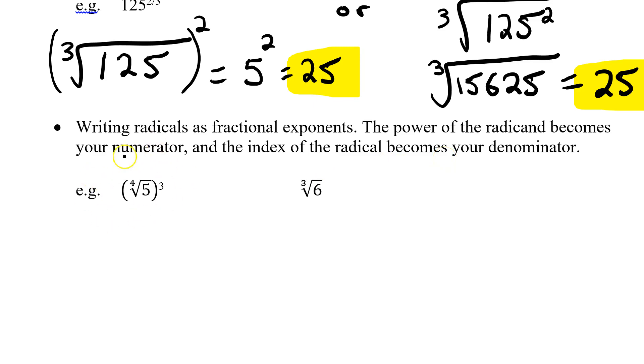So I've got the fourth root of 5 all to the power of 3. So 5 is the base. I keep that as the base. I need a fraction here as my exponent. The index of 4 becomes the denominator and the power of 3 becomes the numerator. So essentially I've got 5 to the 3 quarters power. I'm not going to simplify this anymore because I want to end up with a fractional exponent.